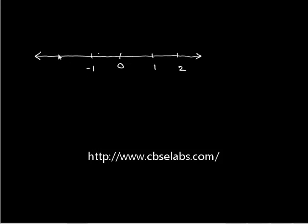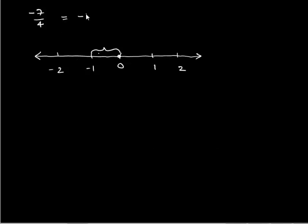Let us first draw the number line indicating integers on it. Zero is the central point and we have positive integers on the right side and negative integers on the left side. To represent the rational number negative 7 upon 4 on the number line, start from 0, take one full unit to the left. This is indicated by negative 1.